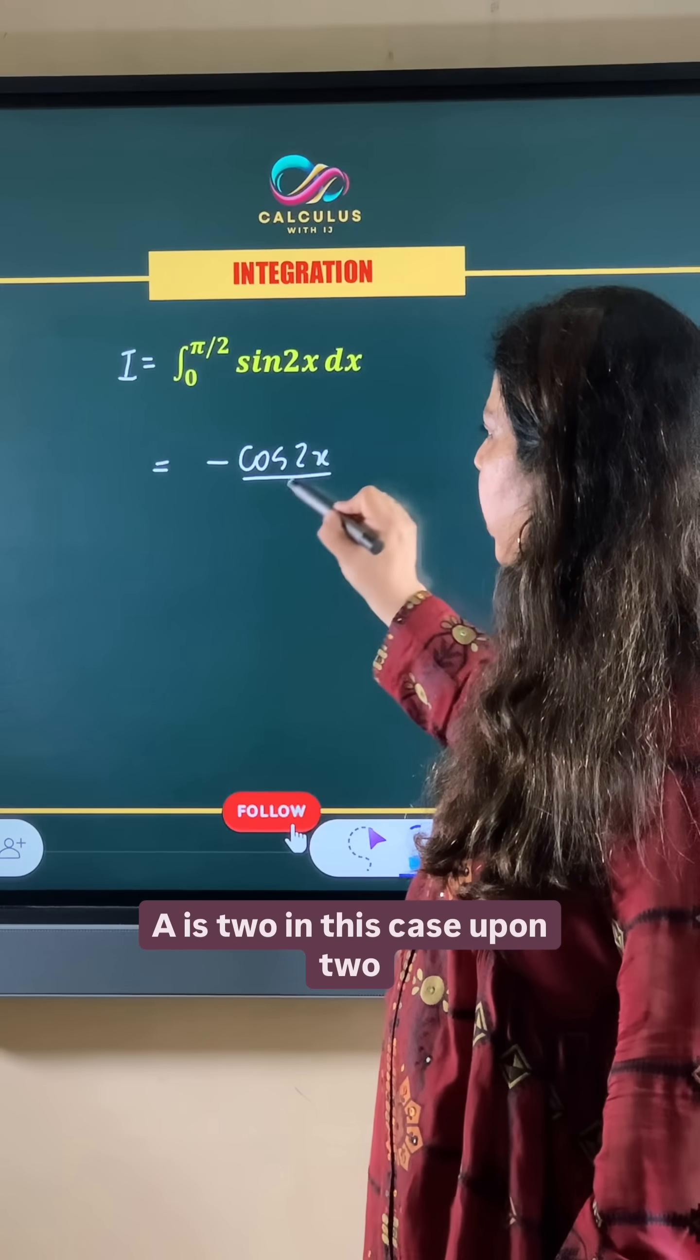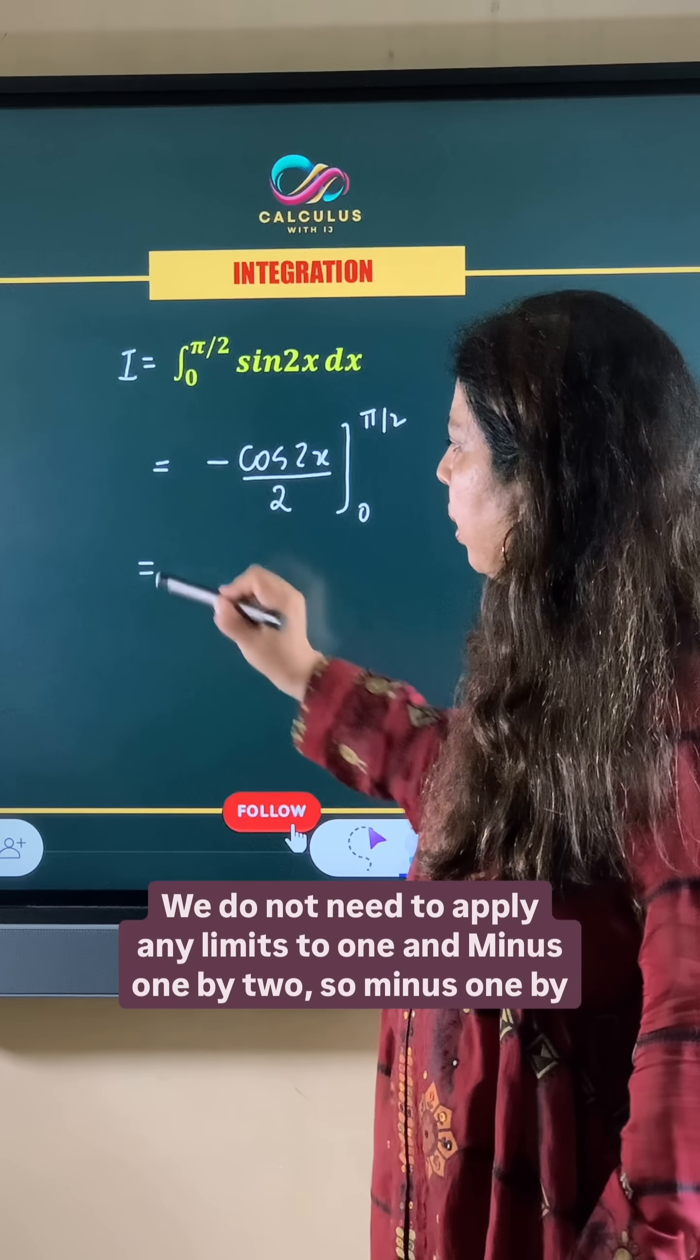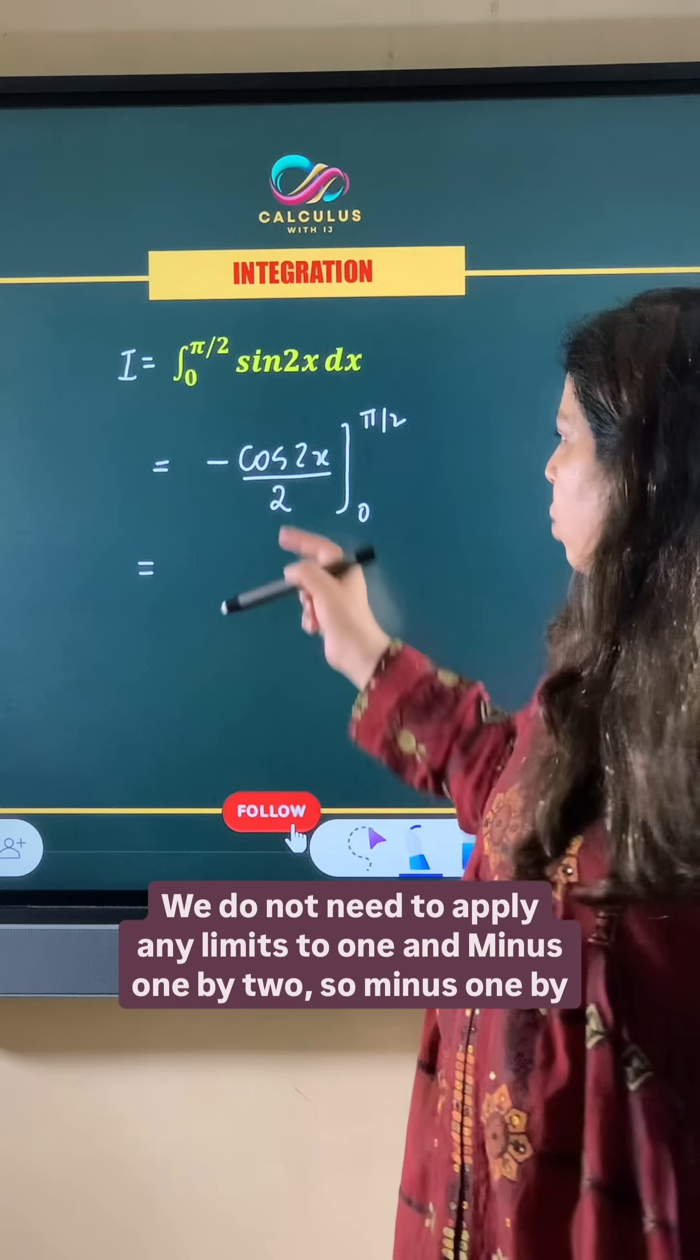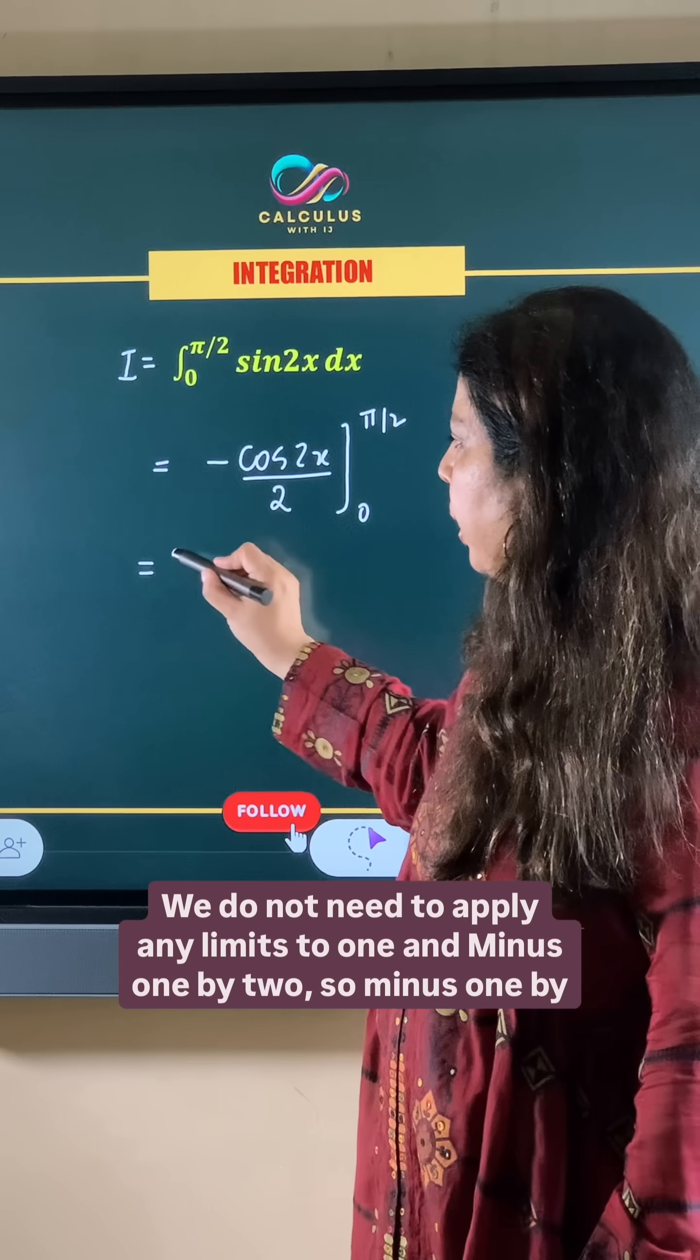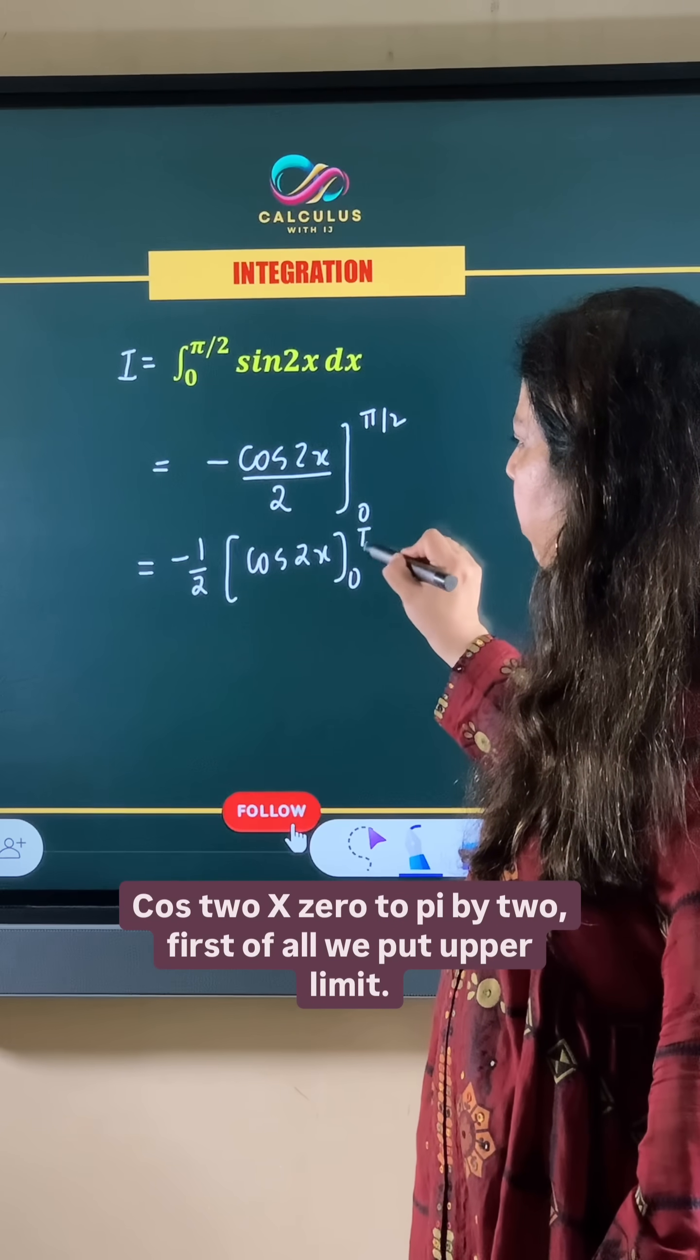So a is 2 in this case, divided by 2, and limits are from 0 to π/2. We keep -1/2 outside the bracket: [cos 2x] evaluated from 0 to π/2.